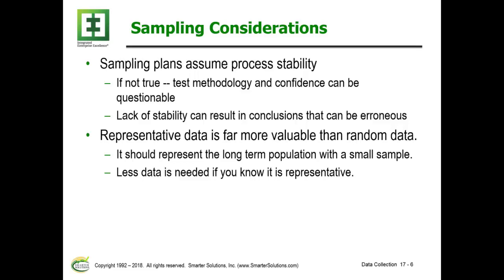Relative to sampling, we need to assume or have stability of our process from a 30,000-foot-level point of view. The lack of stability can result in conclusions that can be erroneous. Again, I'm talking about stability from a 30,000-foot-level tracking point of view.